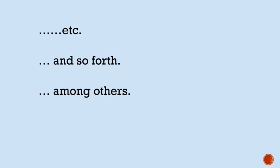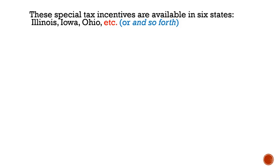Let's look at an example in academic writing: 'These special tax incentives are available in six states: Illinois, Iowa, Ohio, etc.' What are the other three states? There isn't a clear pattern here, so the reader doesn't know what the 'etc.' represents. What are the other three states?